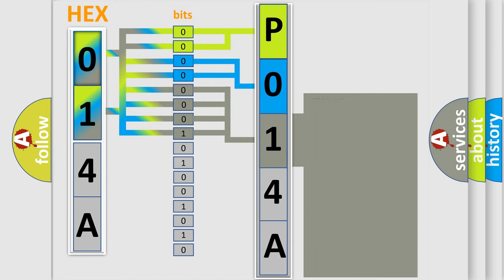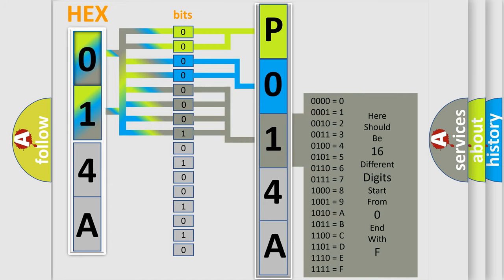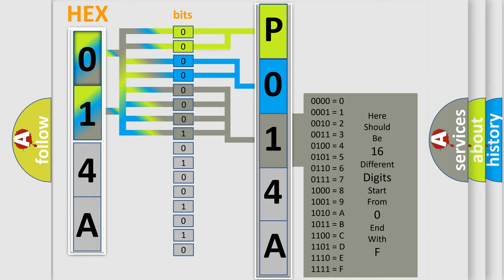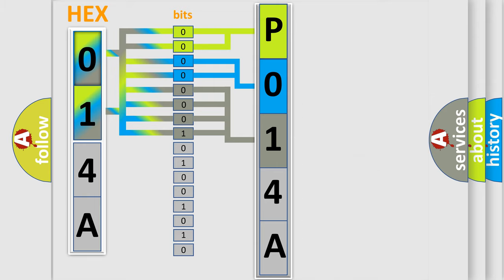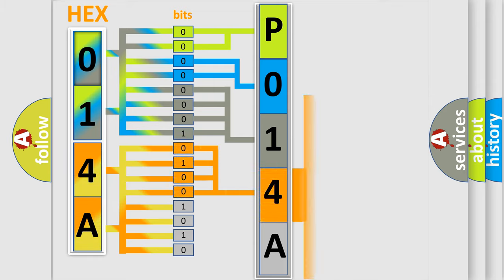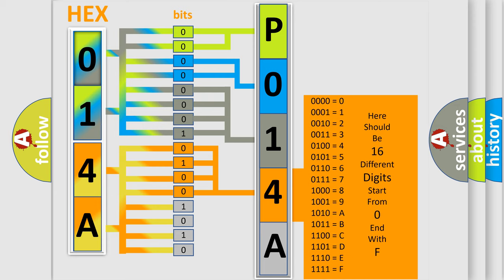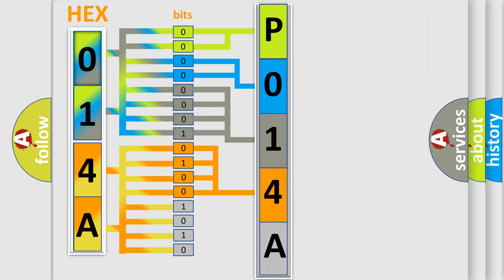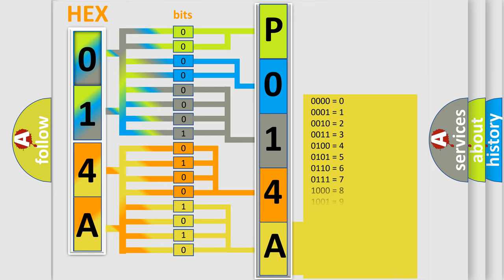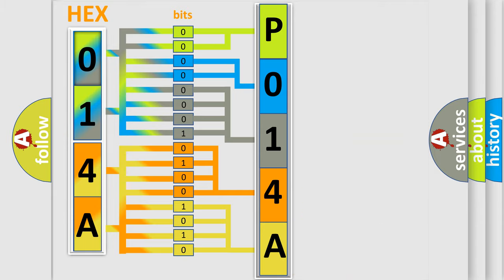The last bits of the first byte define the third character of the code. The second byte is composed of a combination of eight bits. The first four bits determine the fourth character of the code, and the combination of the last four bits defines the fifth character. A single byte conceals 256 possible combinations.